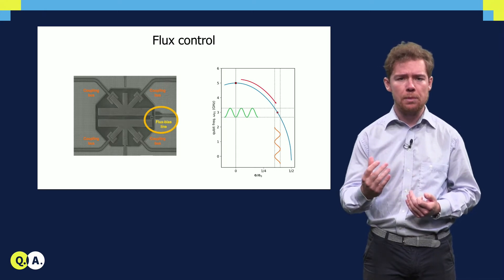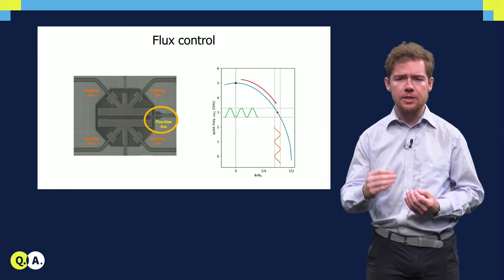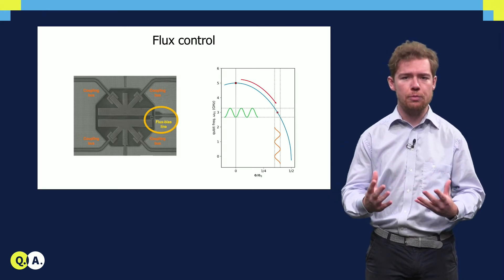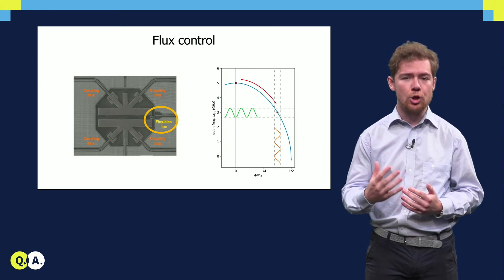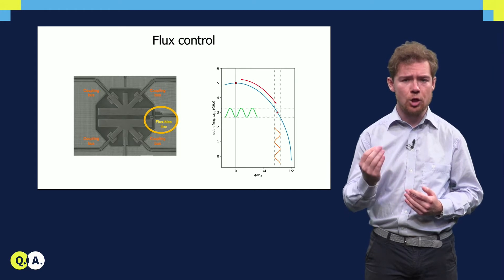When a pulse is applied to the flux bias line, the qubit is detuned from its operating frequency for the duration of the pulse. While the qubit is detuned, phase accumulates.